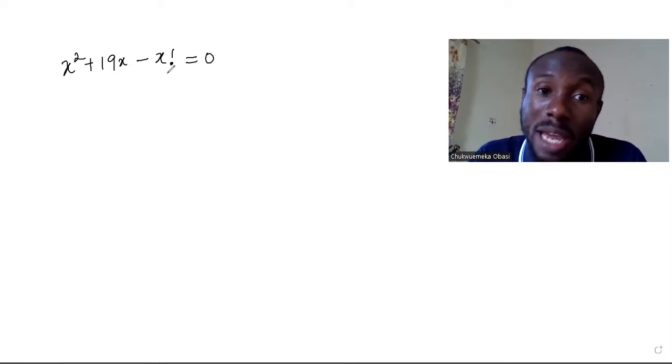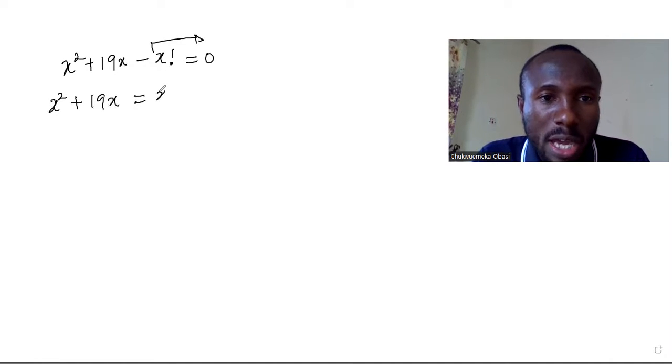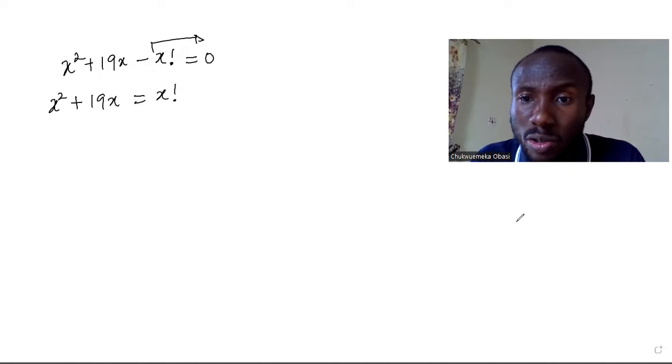The first thing I would like us to do here is to take these guys down to this side, so we have x squared plus 19x is equal to x factorial.